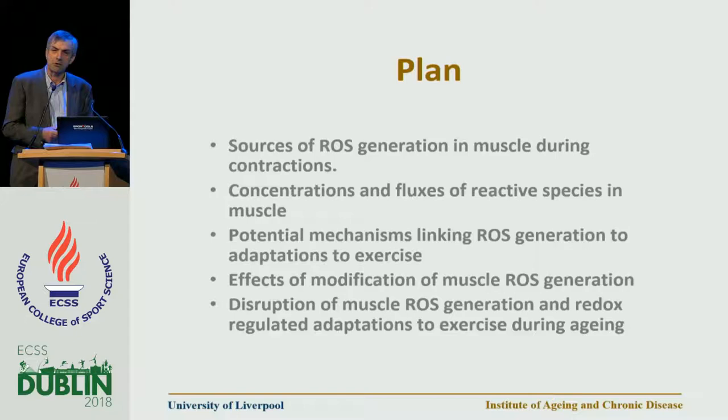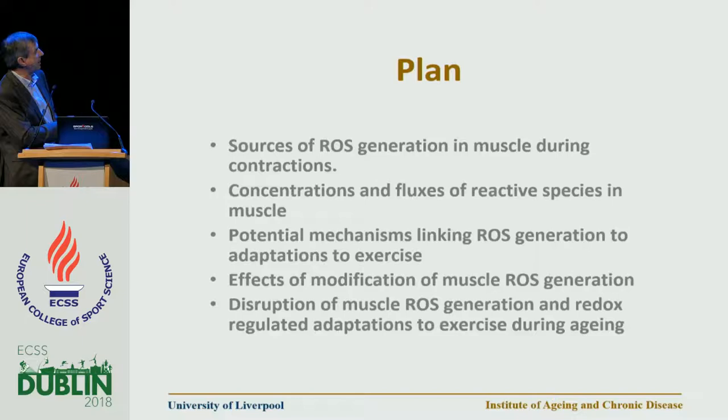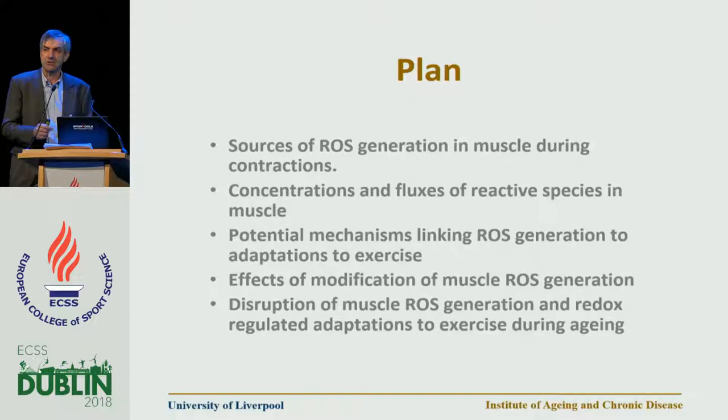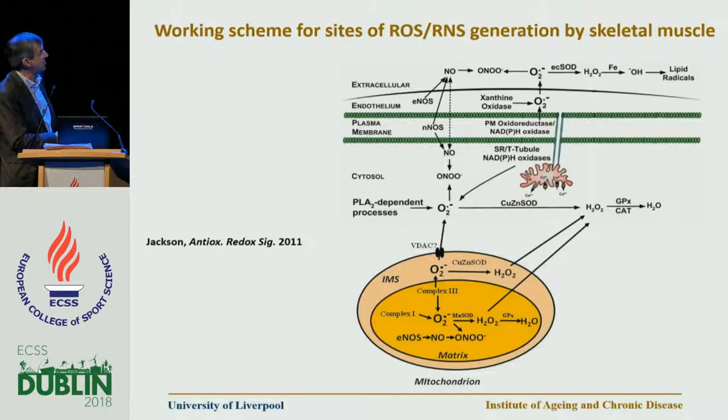What I'm going to try and do is run through a couple of issues. We'll talk about the sources of reactive oxygen species generation, concentrations and fluxes of these labile species, and potential mechanisms. Right at the end, very quickly, I'll come back to what's really exciting us at the moment: what happens if we modify reactive oxygen species generation, and what ageing is doing to this, what it turns out to be a quite sophisticated process.